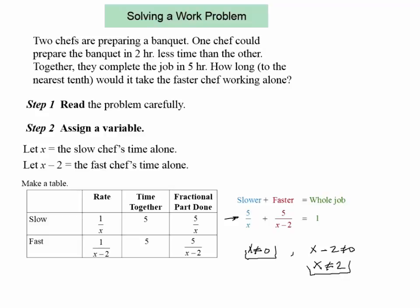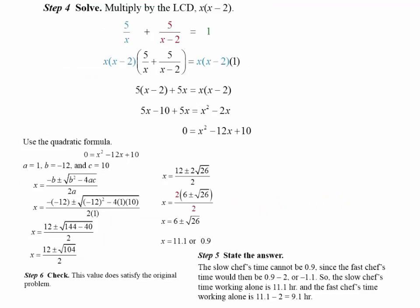So let's take a look. What we need to do is find the LCD first. The LCD would be x times x minus two. Then I have to multiply each term by that to eliminate the fraction. So let's look at the steps. If I multiply each term by LCD, the first term times x times x minus two, x and x reduces to one. So you would get five times x minus two, which is right here.